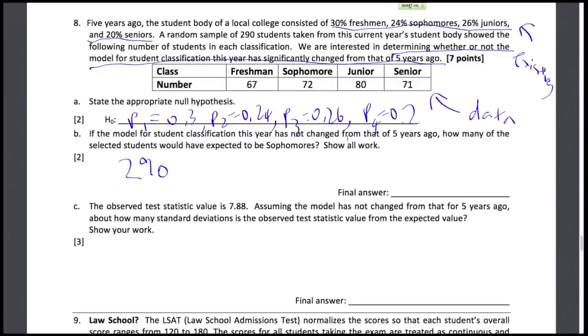And if the model hadn't changed, then 24% of the 290 students would have been sophomores. So the expected number is just 69.6.